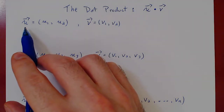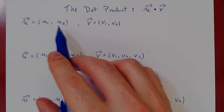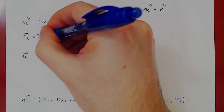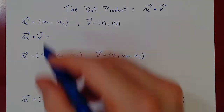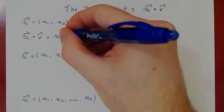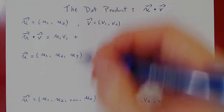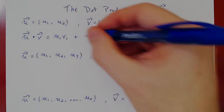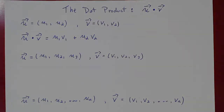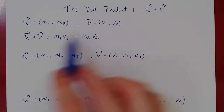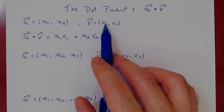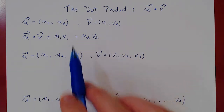Suppose we have two vectors u and v in R2, so vectors in the plane with two components. How do we compute u dotted with v? What we do is remarkably simple: we take the first component of u, u1, times the first component of v, v1, plus the second component of u, u2, times the second component of v, v2. We took the two vectors, and their dot product is simply multiplying corresponding entries — first with first, second with second — and we add them up.